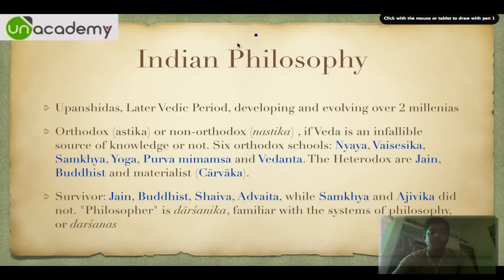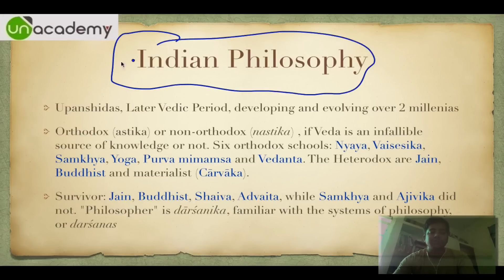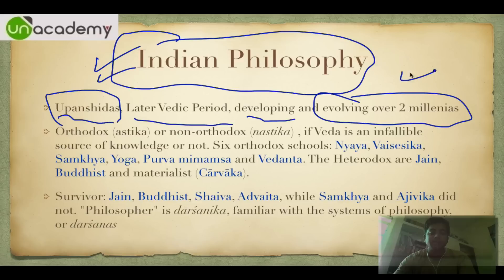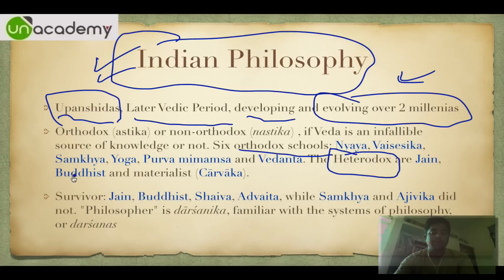In the last class we discussed Indian philosophy dealing with the Upanishads and the later Vedic period, evolving over two millennia. We already talked about the six orthodox schools. Here we will be talking about the heterodox school — Buddhism.